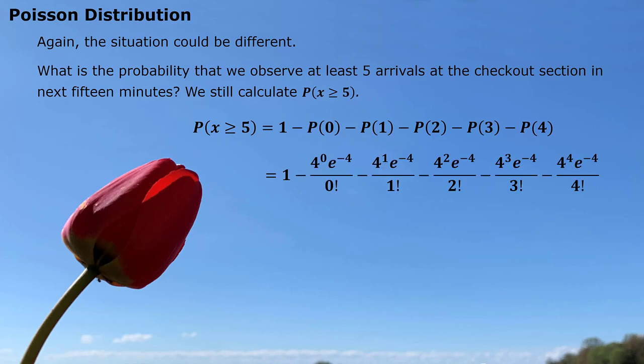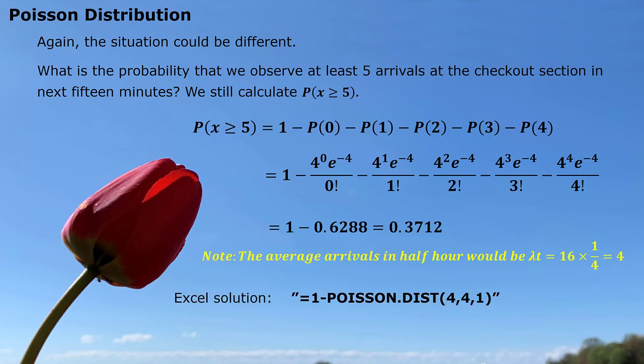We put them all in the formula. This time we notice 15 minutes, that is a quarter of an hour. If we observe 16 arrivals on average per hour, we would observe four on average per 15 minutes. Here we get the answer. We can also use the Excel function to simply get it. And here you pay attention, we use the one for last parameter. We calculate the cumulative situation. That includes zero, one, two, three, four. That's cumulative. And then we use one minus. That's what we wanted.